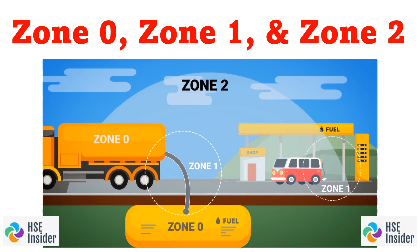In conclusion, the zoning classification system of Zone 0, Zone 1, and Zone 2 plays a critical role in identifying areas with potential hazards and implementing necessary safety precautions. By categorizing facilities into these zones and using equipment certified for hazardous environments, employers can protect their employees and prevent incidents. It is important for all personnel working in such areas to be aware of the zoning classification and adhere to safety protocols to ensure a safe working environment for all. Thank you, friends — we'll meet in the next video.